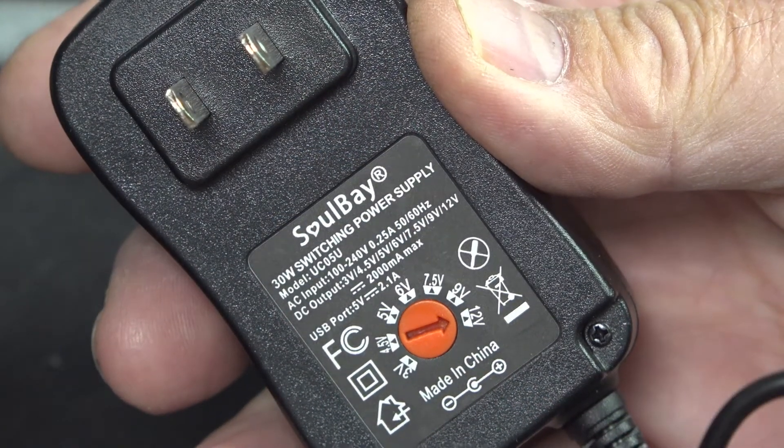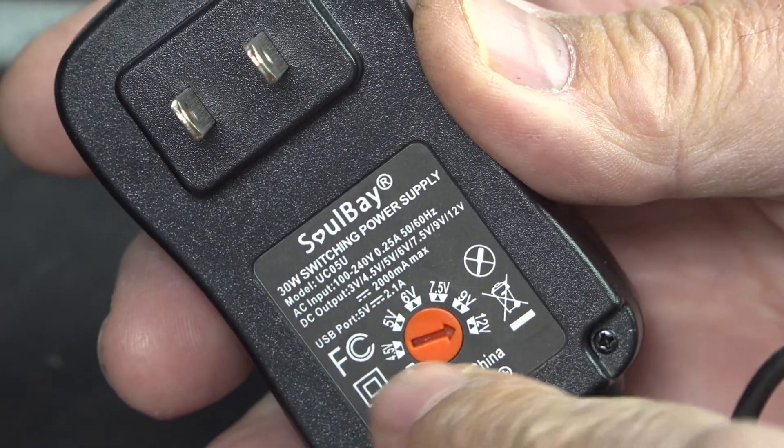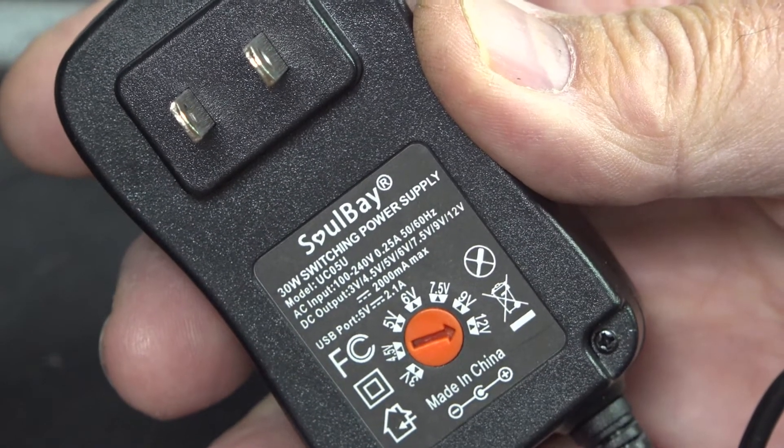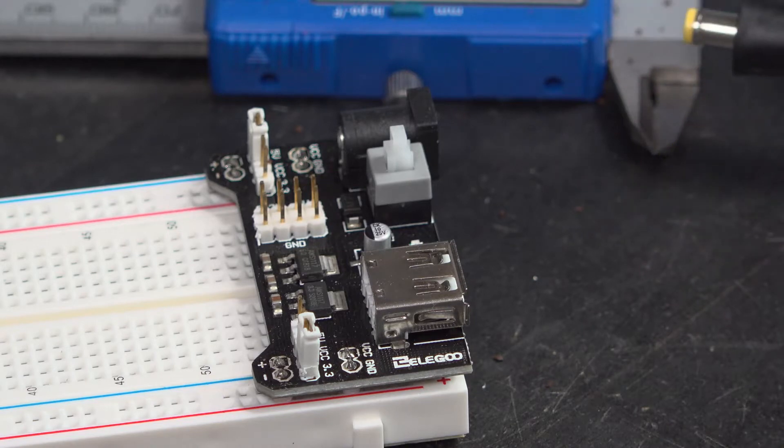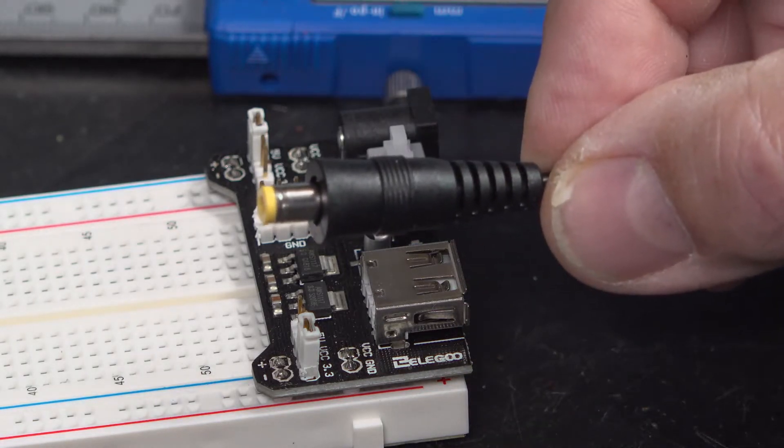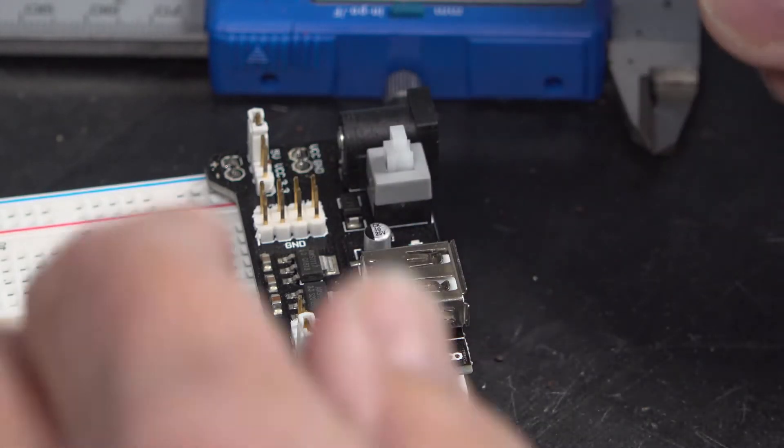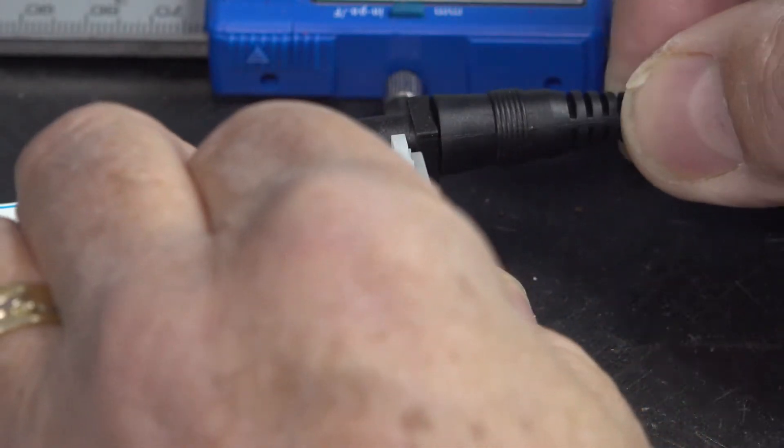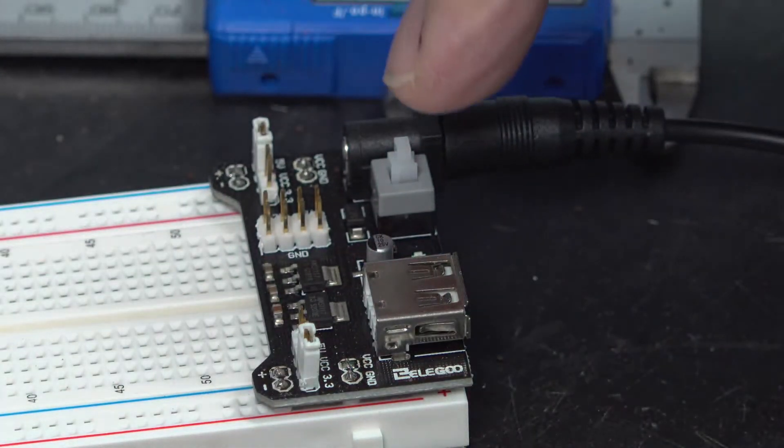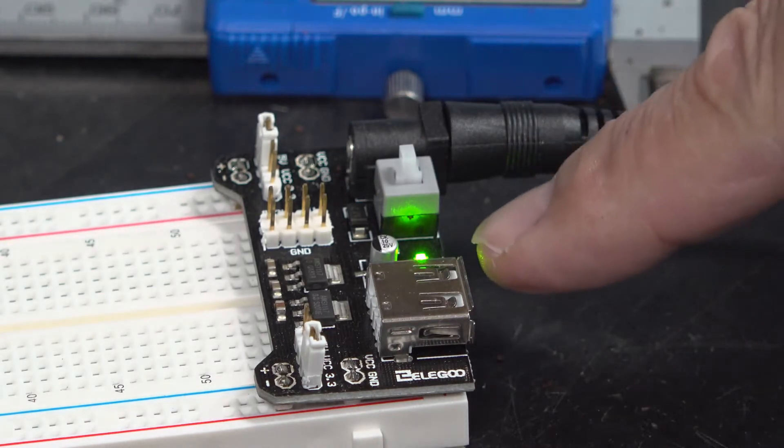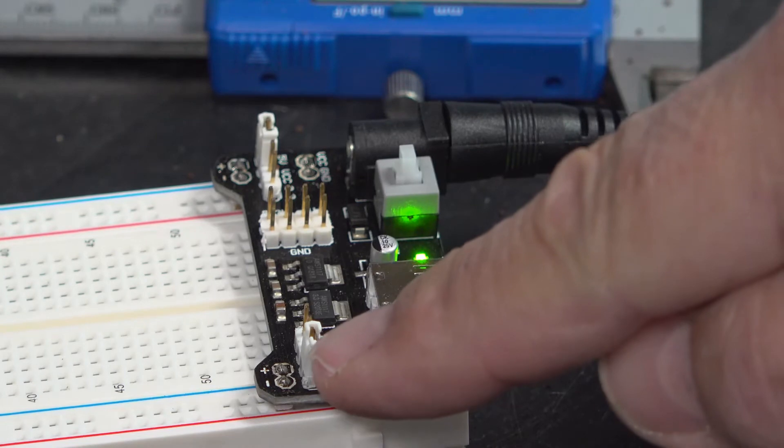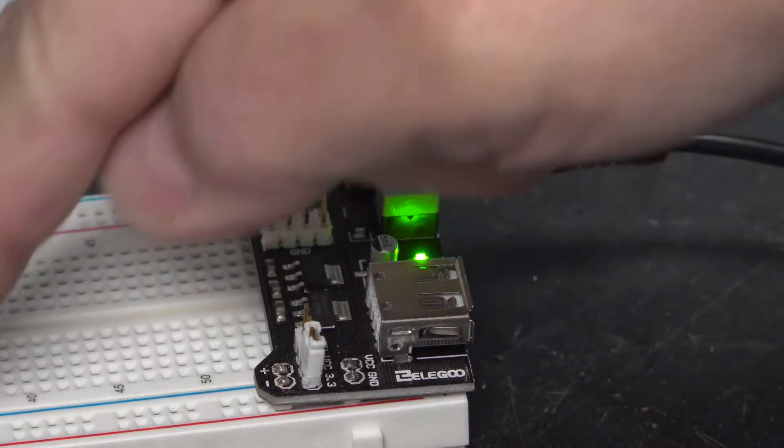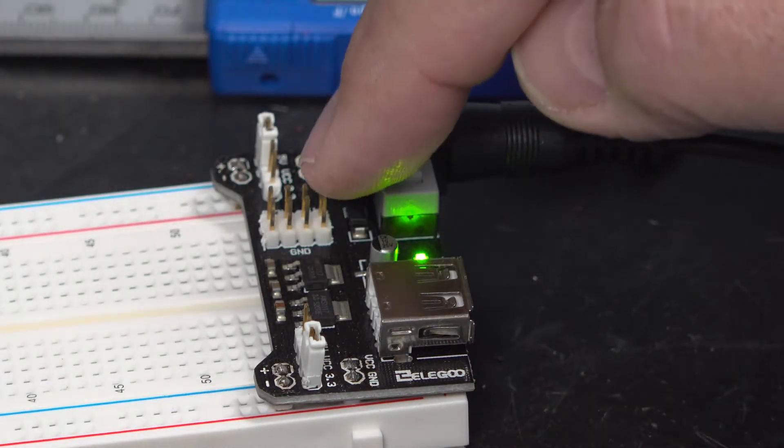We're going to take the Solbay power supply, and we've dialed it into 12 volts. This will be our power source. We're going to take the cable end of the Solbay, and that'll plug into the header board mounted on the breadboard. We plug it into the connector, hit the power button, and we have a green LED indicating we have power to the USB port, as well as selectable 5 volts or 3.3 volts down the rail.